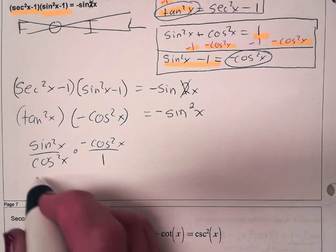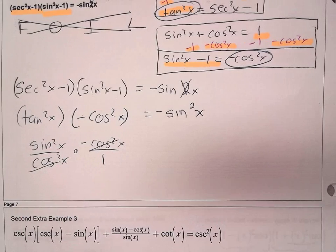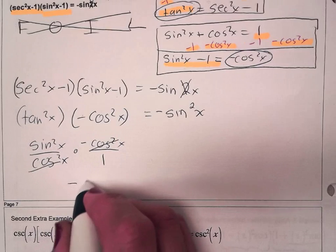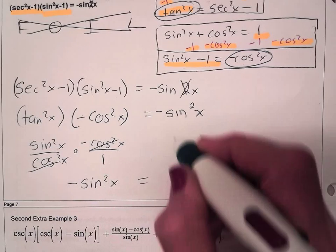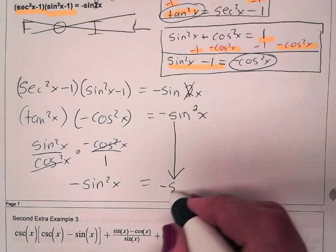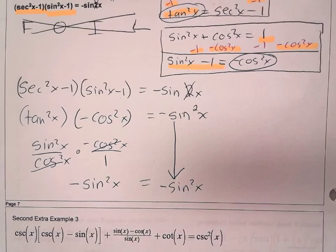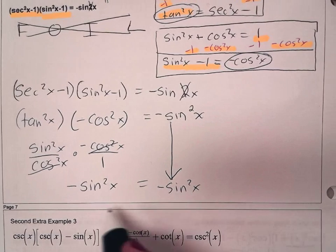And you can see the cosines cancel and you're left with -sin²x on the left. And -sin²x is what they told you to make it look like. So now you're done.